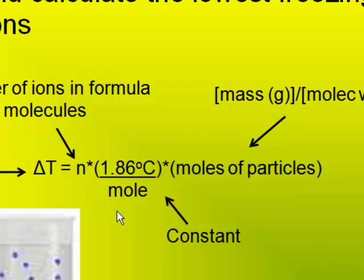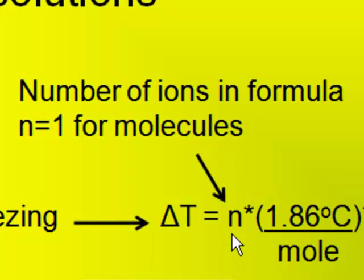The equation is as follows. The change in freezing point, which would be the drop in temperature, is equal to N, which is the number of ions in the formula. So if the compound that you're putting in the water is an ionic compound, you count the number of total ions in the formula.